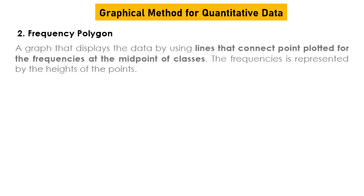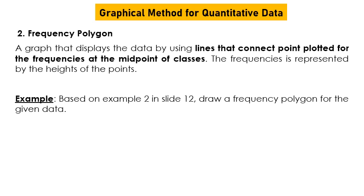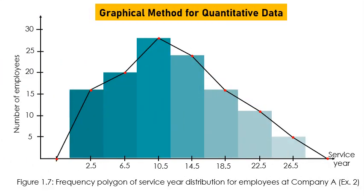A frequency polygon is a graph that displays data by using lines connecting points plotted for the frequency at the midpoint of each class. The frequency is represented by the height of the point. For the histogram we used boundaries, but for the frequency polygon we use midpoints — for example, midpoint 2.5 — and we connect the dots at the midpoints.